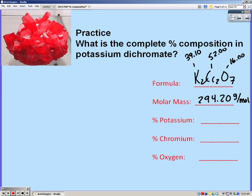So we're trying to find the complete percent composition, so we need to find the percent of potassium, chromium, and oxygen. Anytime it's the complete percent, you're going to find the percent of each of the elements. So potassium we're going to do first. We have 39.10 times 2 gives you 78.12.